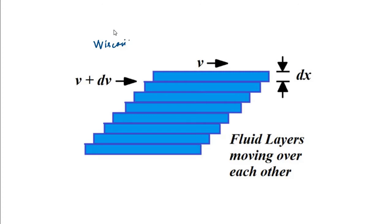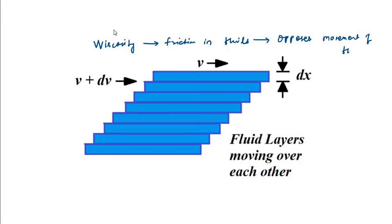In short, viscosity is friction in fluids — it opposes the movement of fluid layers. The movement of fluids is generally in the form of layers one above the other, with different velocities separated by a specific margin. We will now discuss what governs the value of this fluid friction force — whether there is a law which determines it.